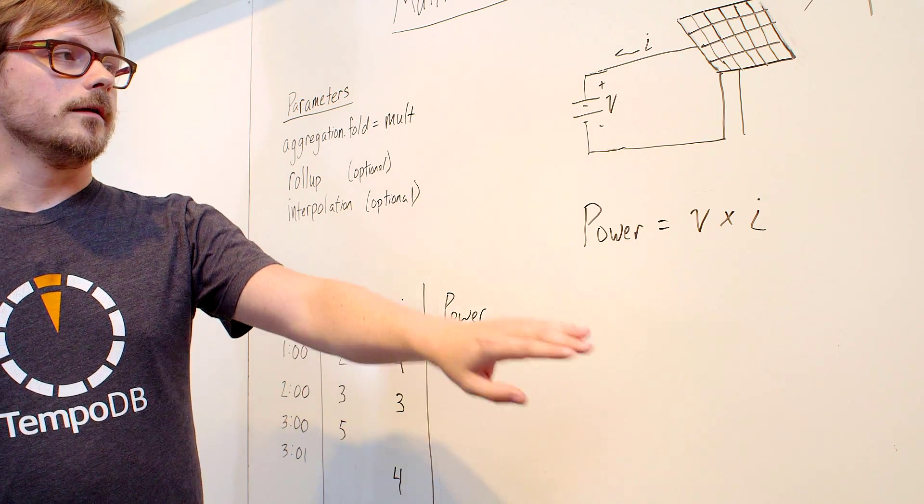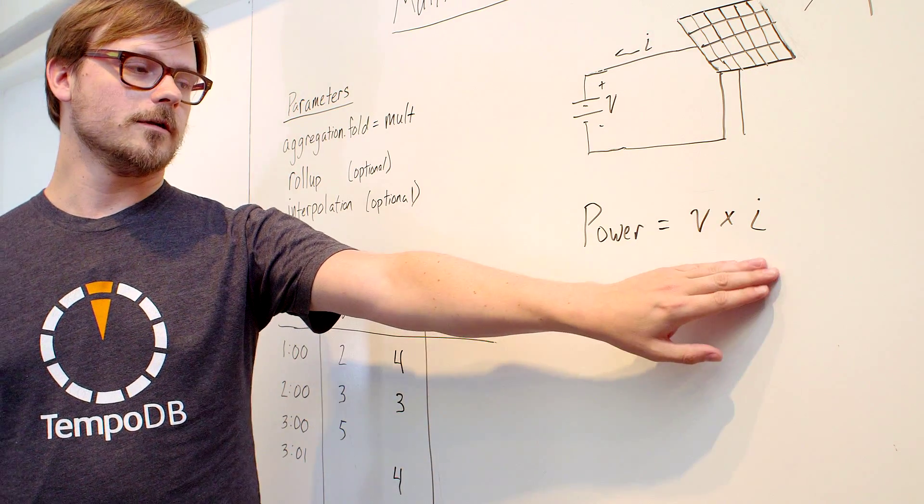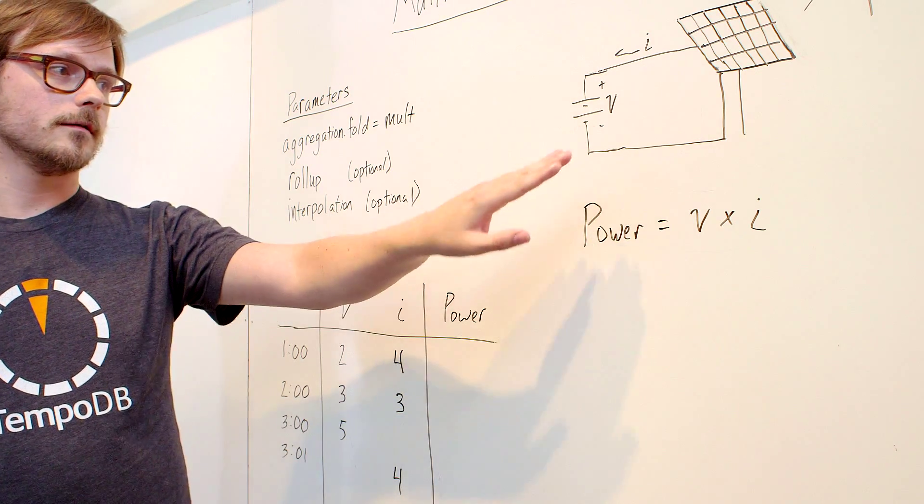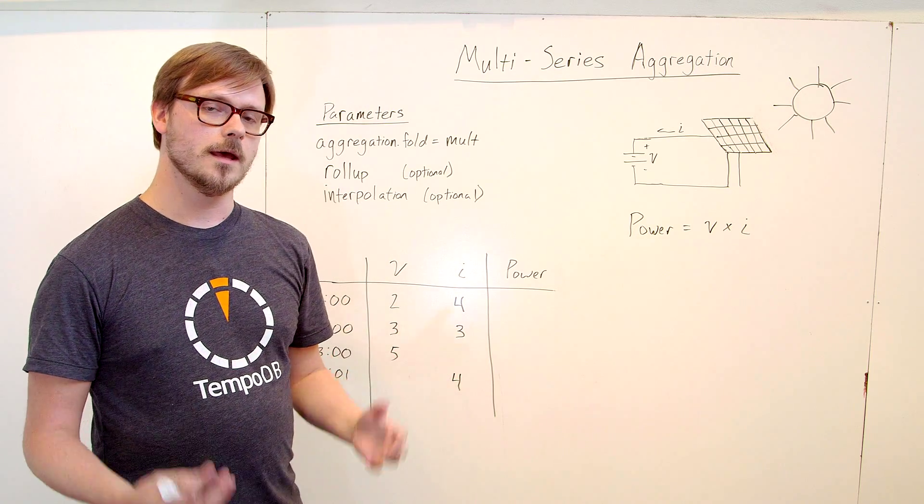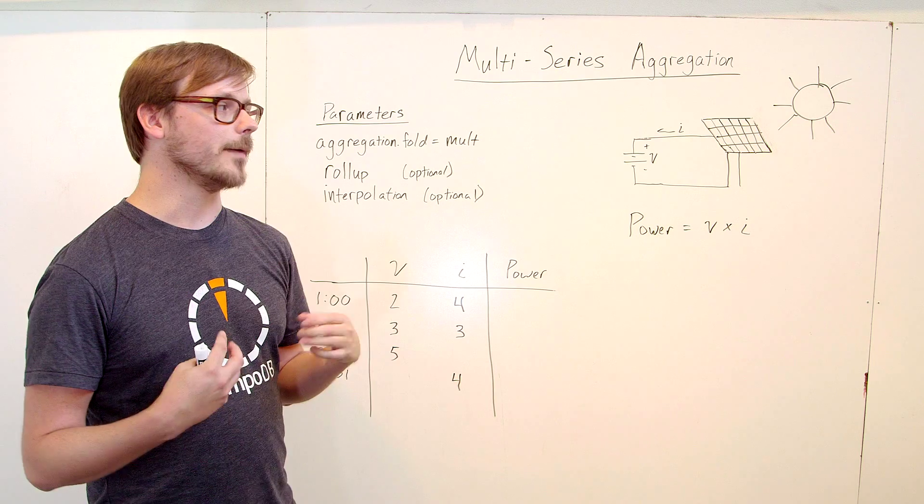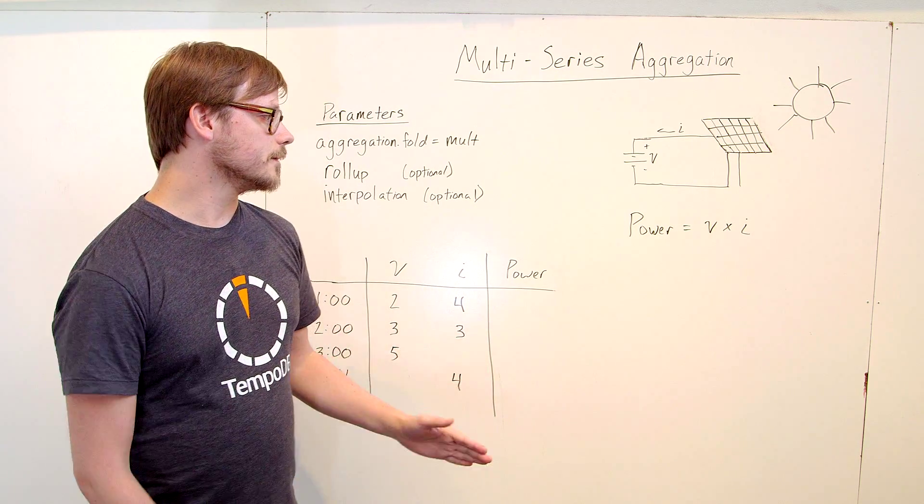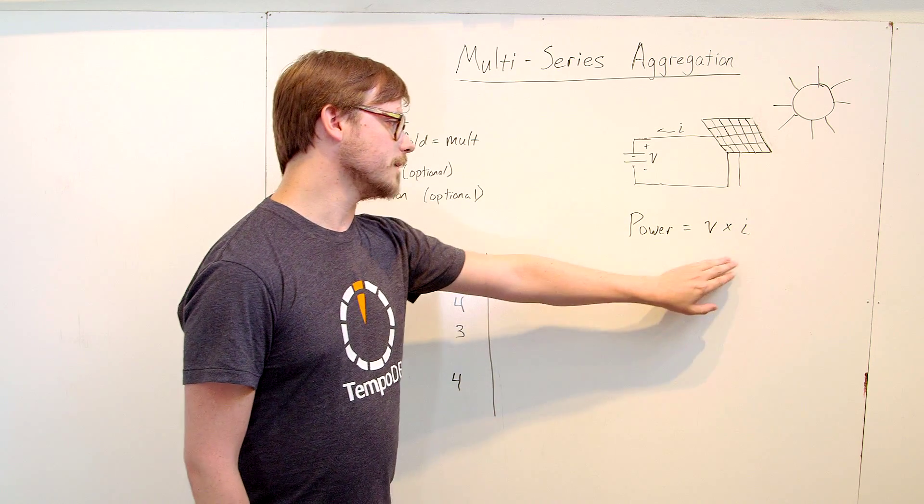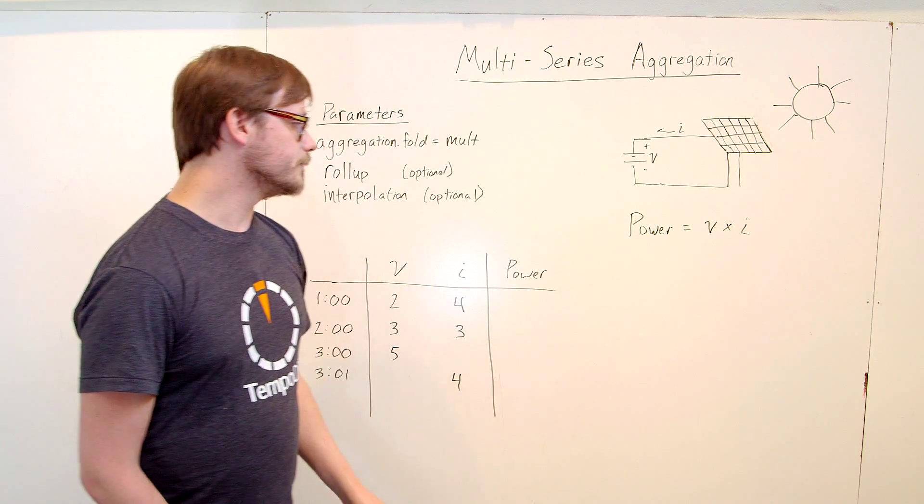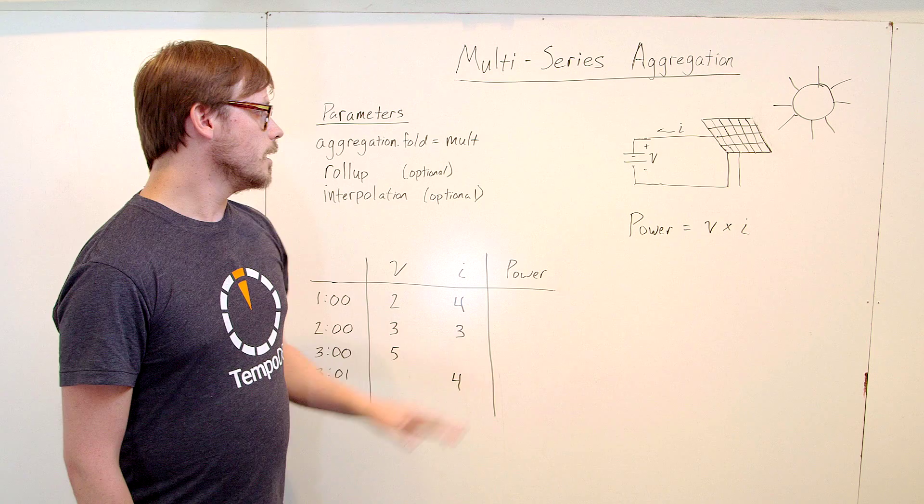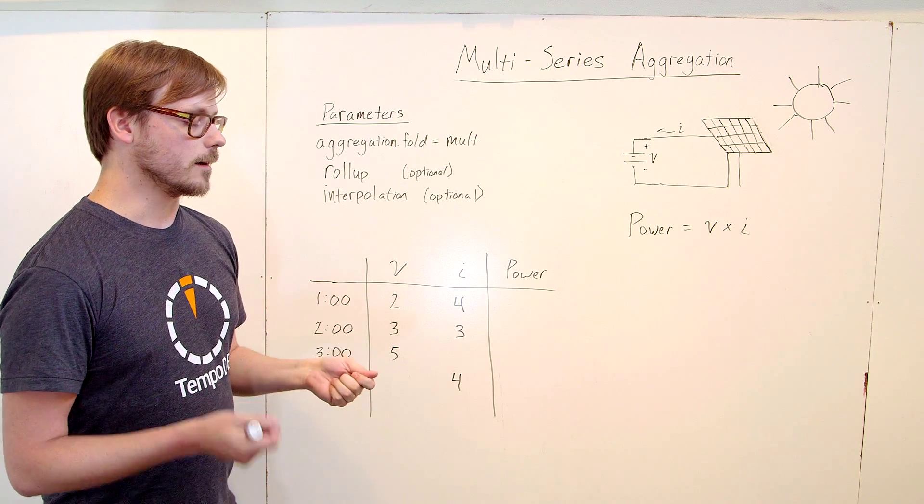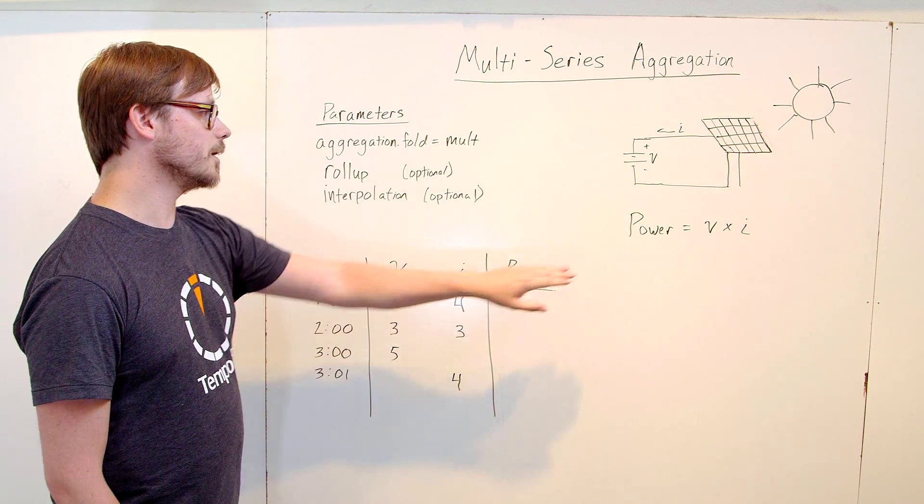Say you had a solar panel, and you're measuring the current, denoted by letter I, and the voltage. So you have two series, and you want to calculate the power that this panel is putting out. So as we know from physics class, power equals voltage times current. So the way you could express this in the query is by applying an aggregation function to multiply these values together.